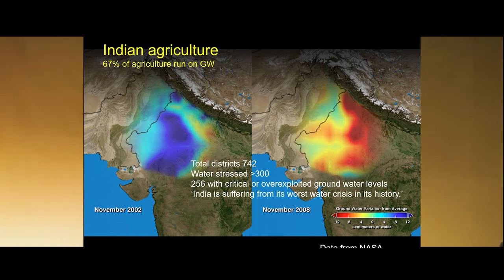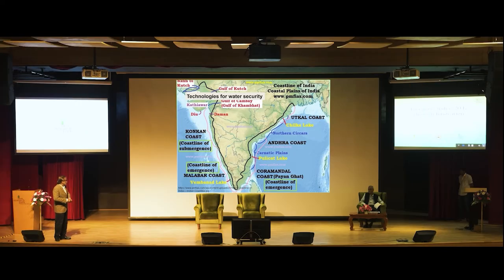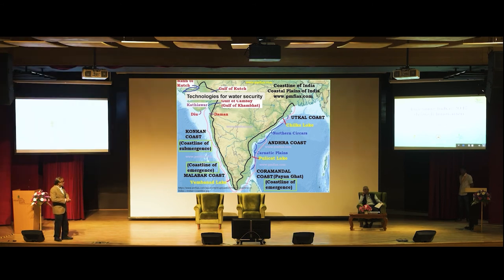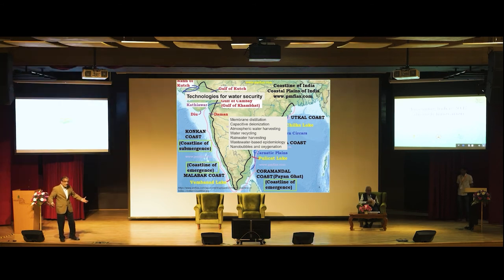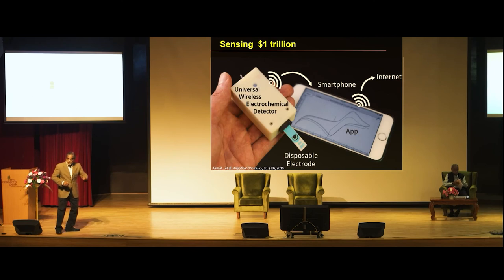Looking at agriculture, we are running 67% of agriculture on groundwater, which means we have depleted groundwater resources tremendously and a large number of districts are water-stressed. India has abundant sunlight — it is possible to run a huge variety of technologies on solar power, including freshwater technologies, desalination, dry water recycling, and wastewater recycling. All of these can be run on photovoltaics with today's technology.